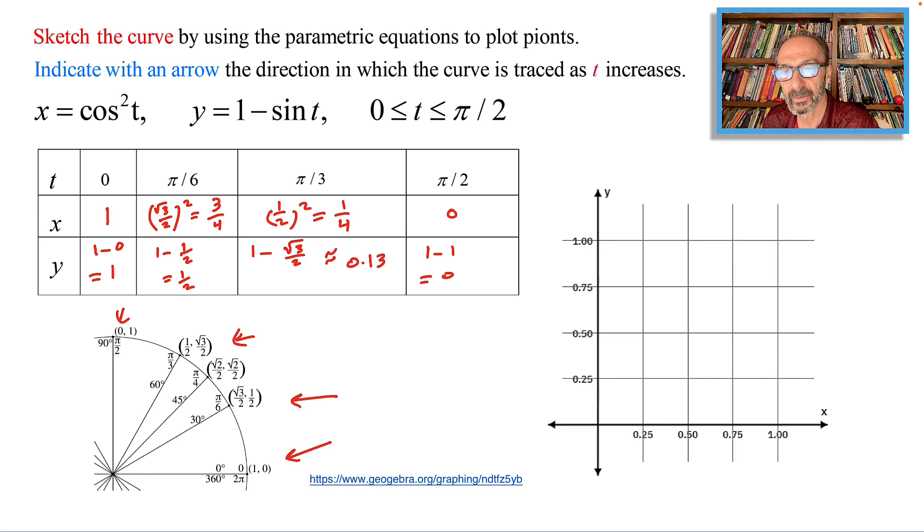At t equals 0, 30 degrees, 60 degrees, and 90 degrees. For the first one, when t equals 0, we have 1, 1, and that's our start point. When t equals π over 6, we have 3/4 for x, that's 0.75, and half for y, so we are right here.